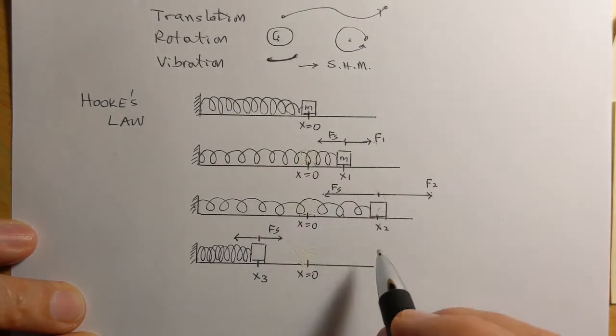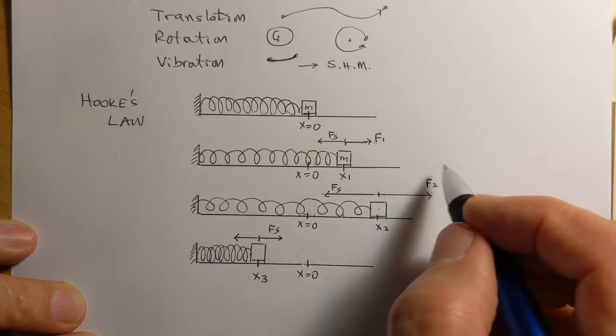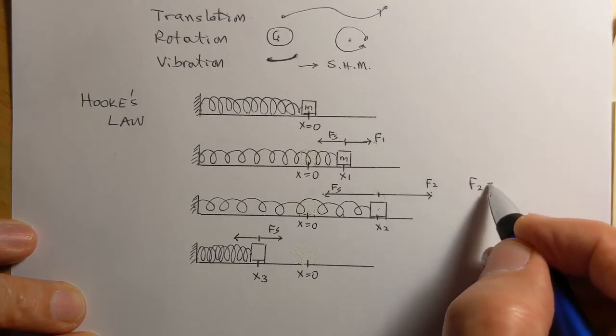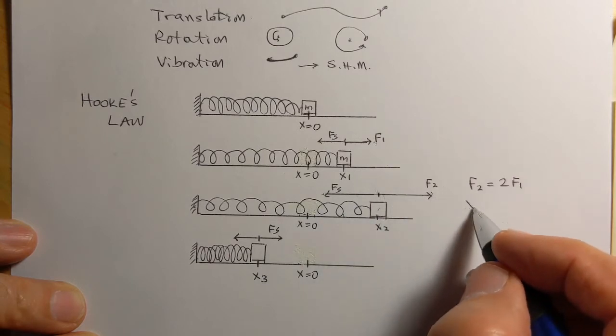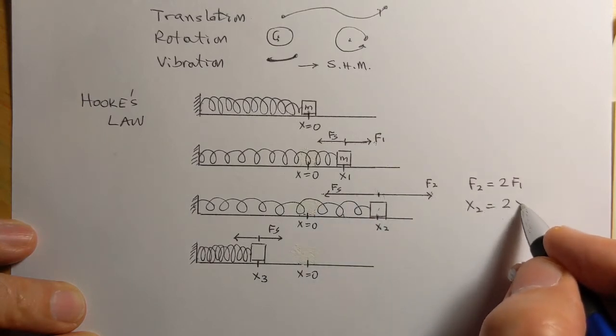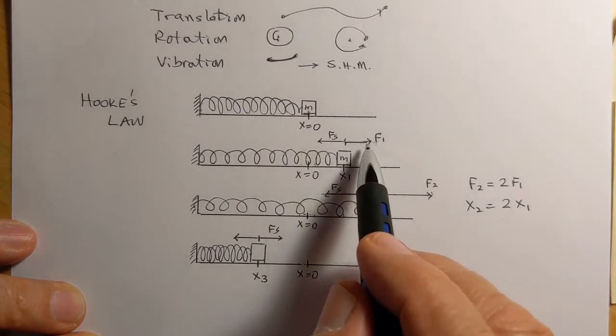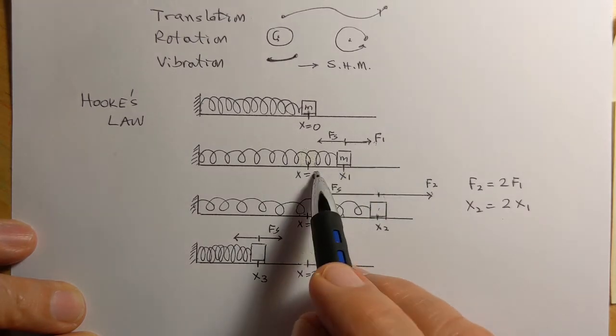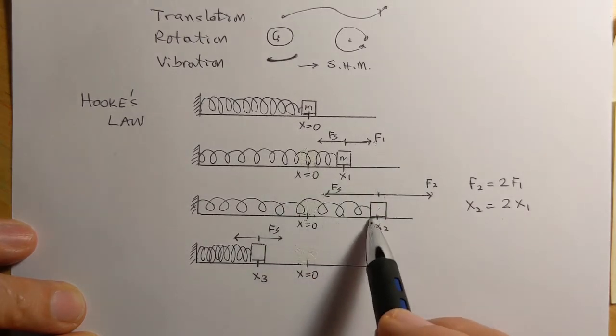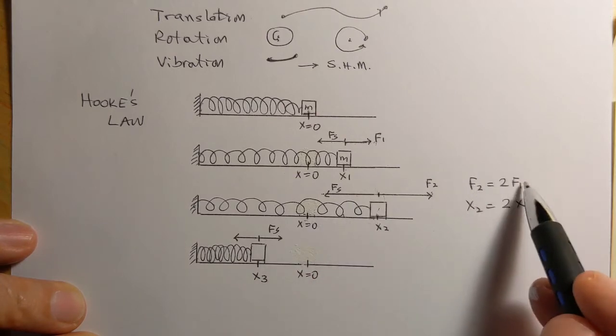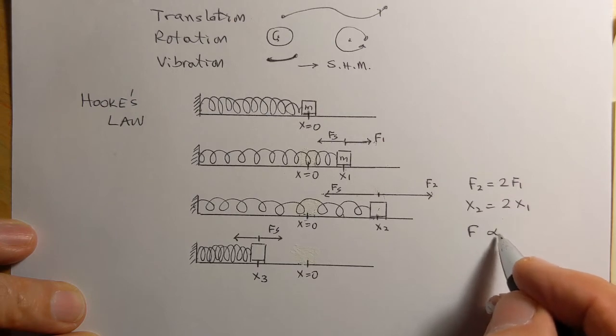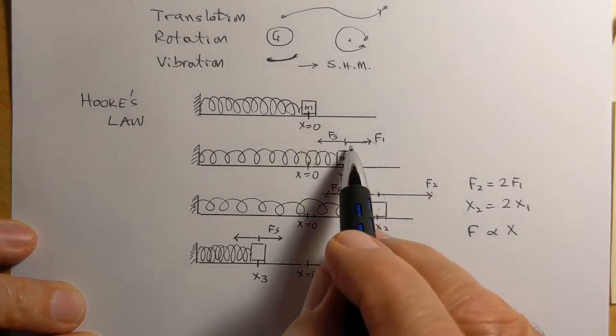So now what we find is that if F2 is equal to two of F1, if you double this force, then x2 becomes double of x1. So this force and the displacement from x equal to zero, or the stretch, they are both proportional. The force and the stretch are proportional, so F is proportional to x, where F is the applied force and x is the displacement.